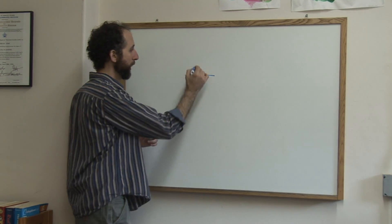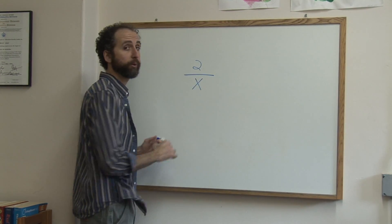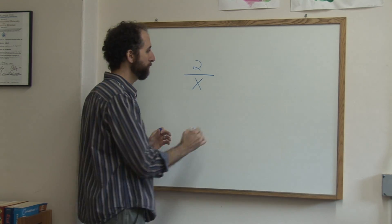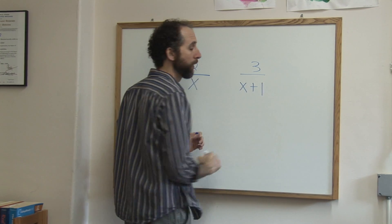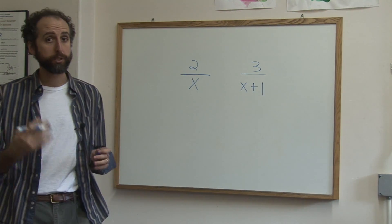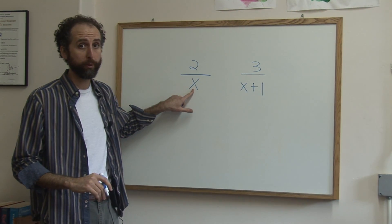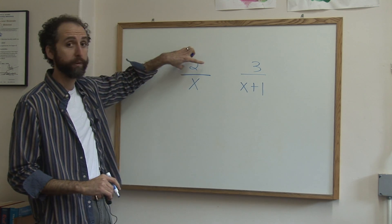So like this is a very simple kind of rational expression. Here would be a more involved rational expression. So these are both rational expressions, simply meaning that there's a variable on the bottom of the fraction, instead of just on the top.